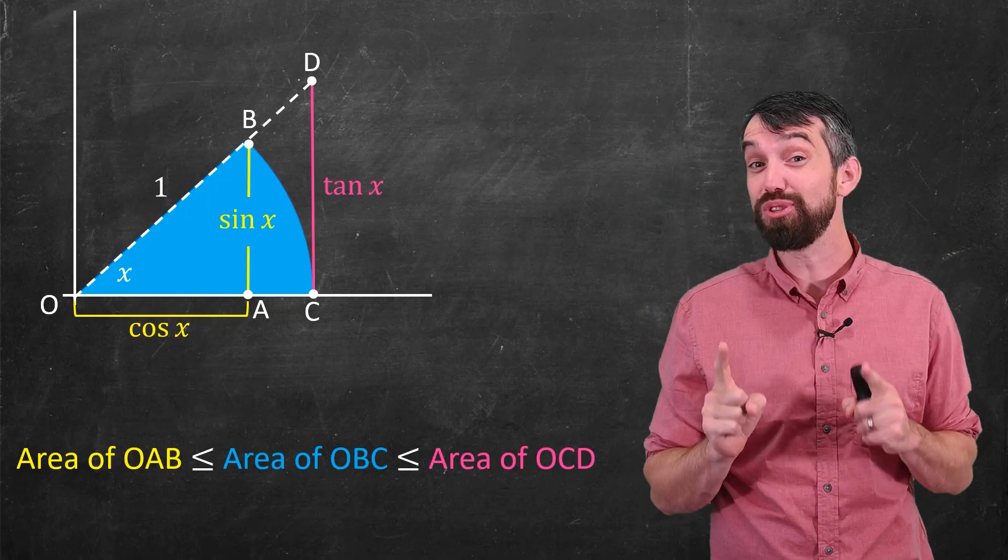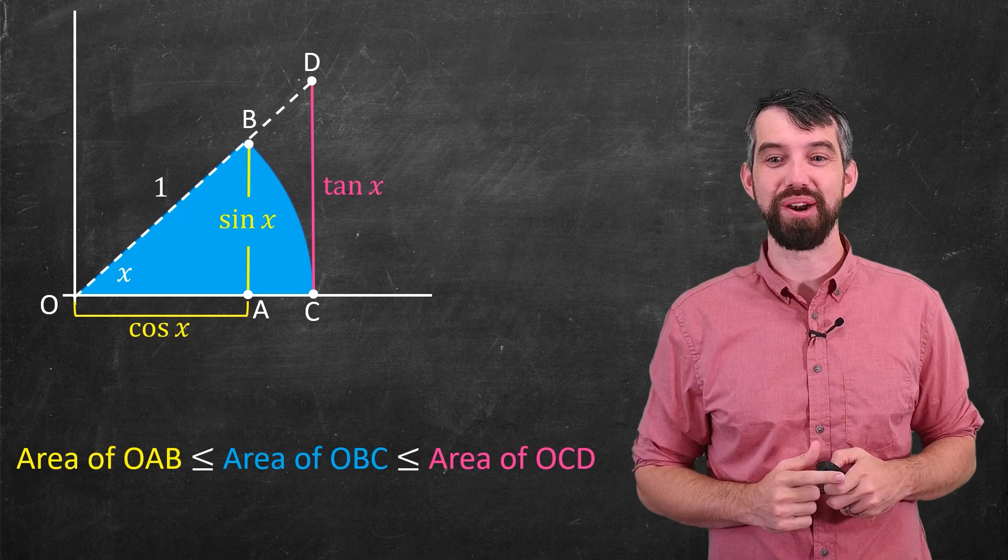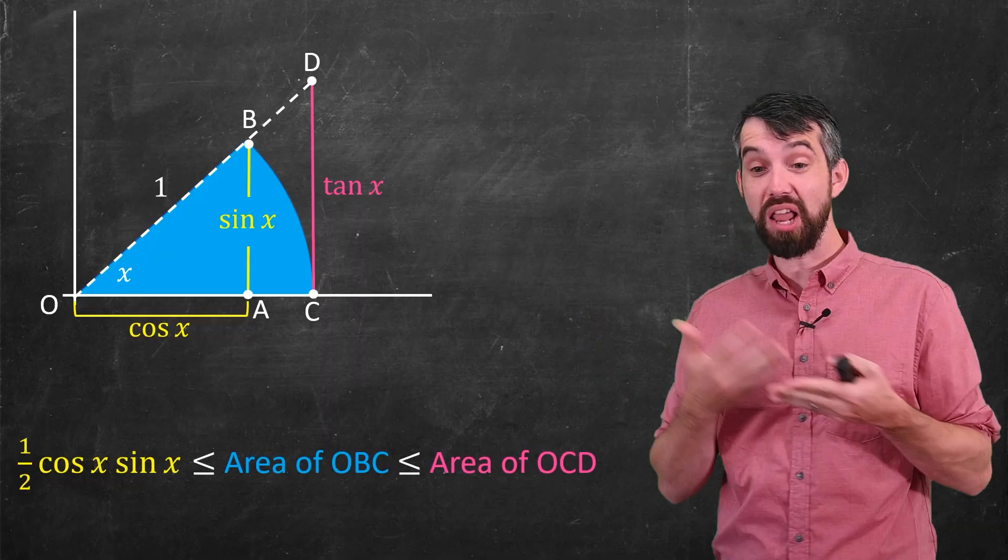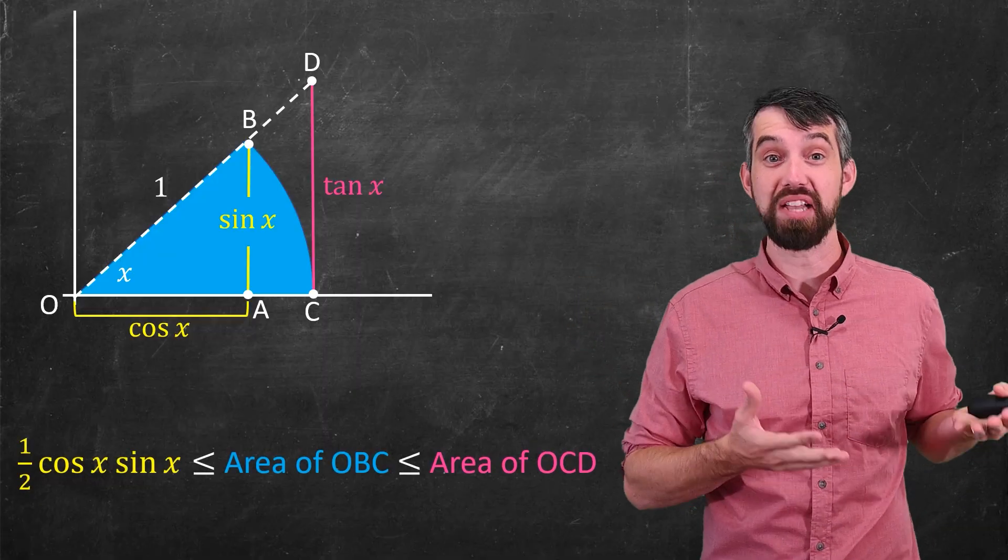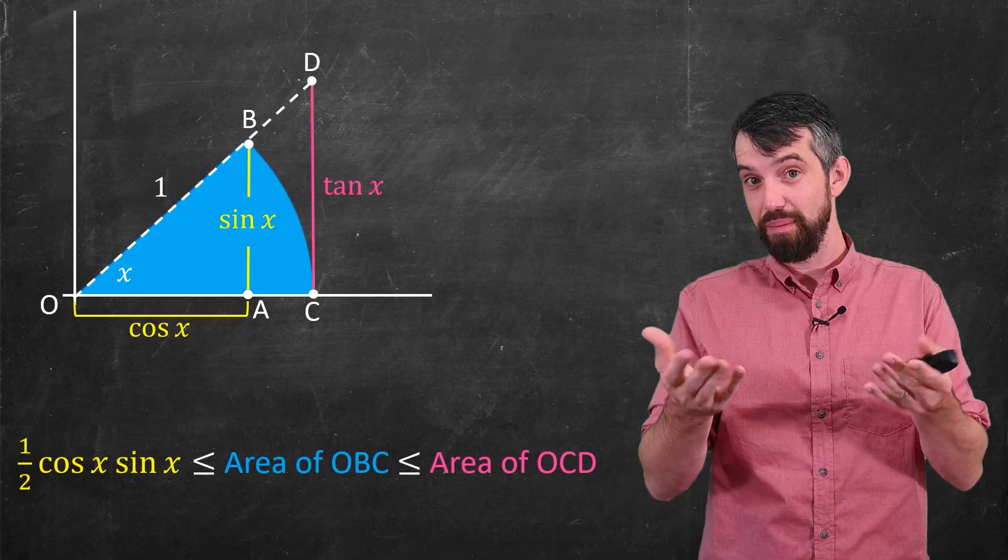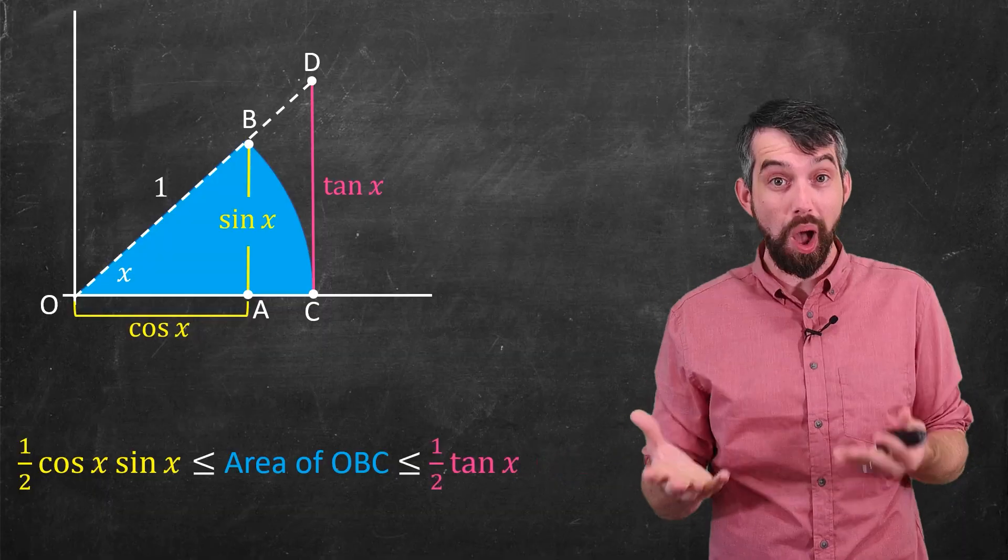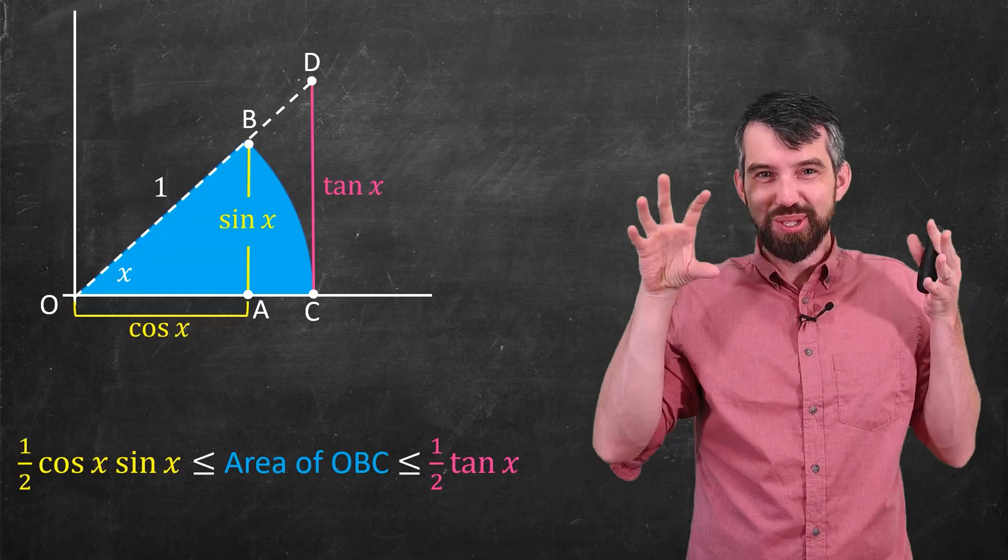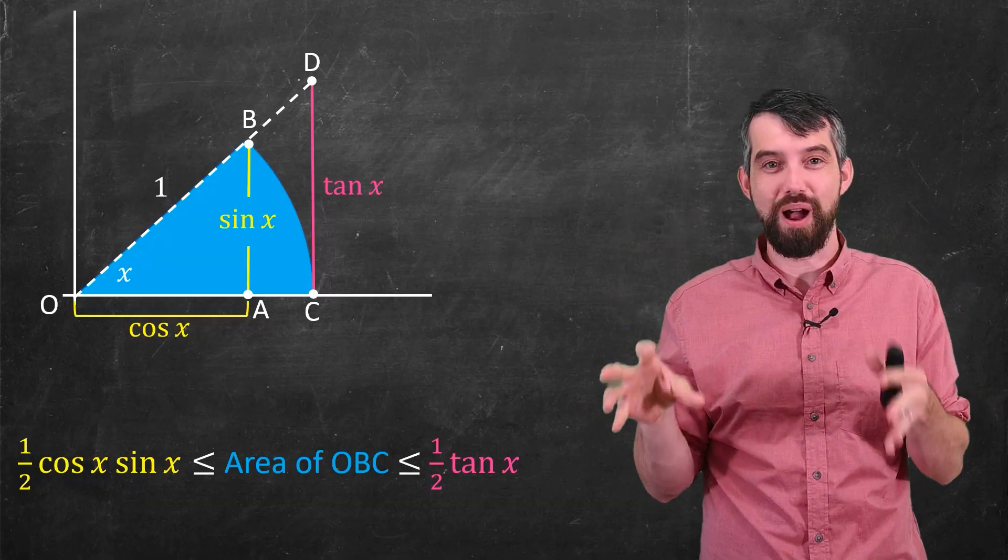And here's the trick. Both of those triangles, I can tell you exactly what their area is. Area is one-half base times height. So the area of that smaller yellow triangle is just one-half cos times sine of x. For the bigger triangle, it's one-half tangent of x times 1, so one-half tangent of x.